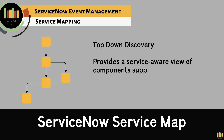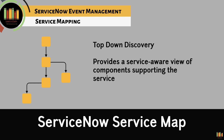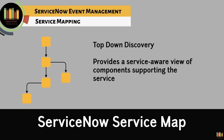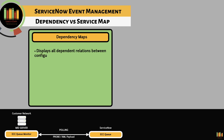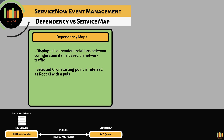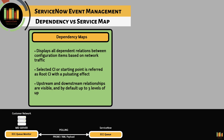Service mapping, also known as top-down discovery, only discovers components specific to the service. It provides a service-aware view, assisting with discovering only the components supporting a specific service. Dependency maps pictographically display all the dependent relationships between configuration items and display how CIs are related to each other. The starting point of a dependency map is called the root CI and has a pulsating effect.